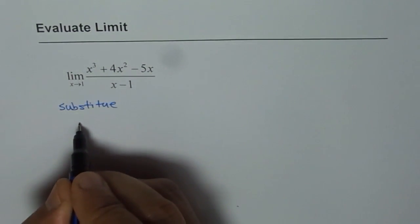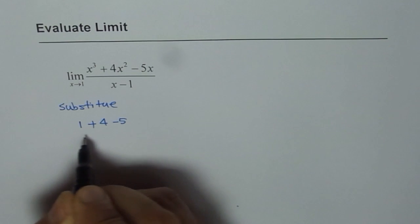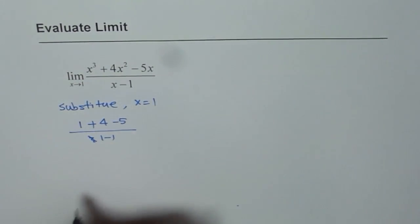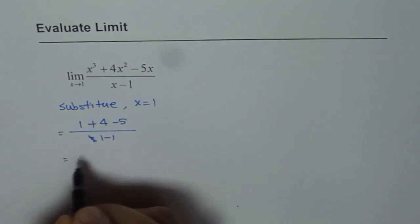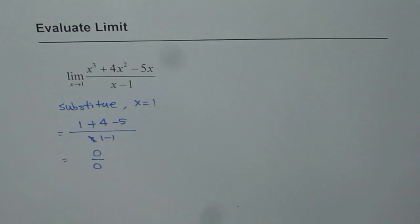So once you substitute, what do you get? You get 1 plus 4 minus 5 divided by 1 minus 1. So we substitute x equals 1 and then check. So we get 5 minus 5 as 0, 1 minus 1 as 0, which gives 0 over 0.